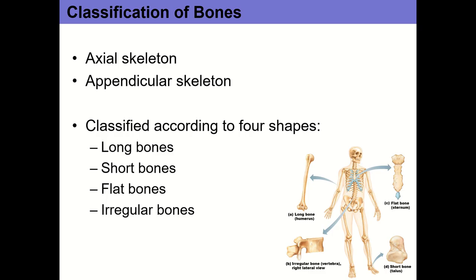The axial skeleton includes the skull, the spine (vertebrae), ribs, and sternum — sometimes the pelvis is grouped in there too. Everything else is the appendicular skeleton: in the upper body the clavicle and scapula working distally; in the lower body the pelvis working distally.